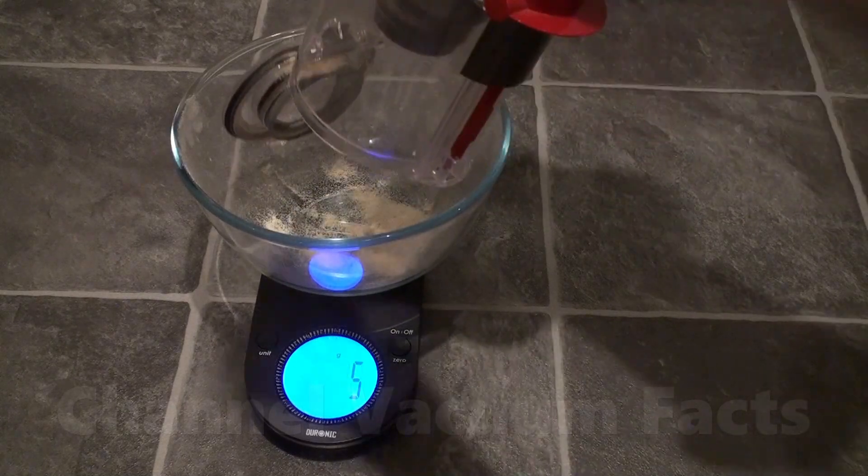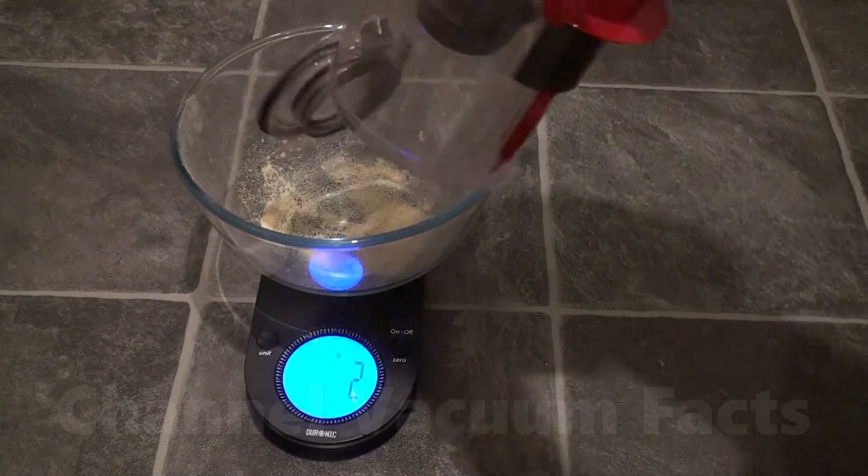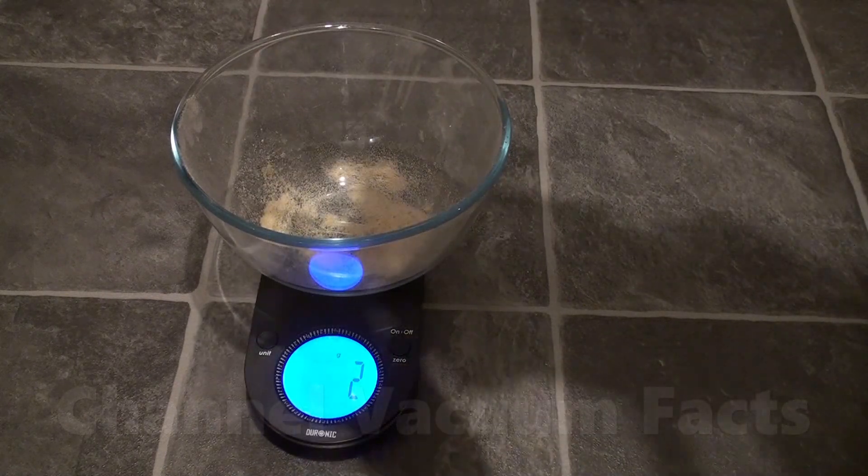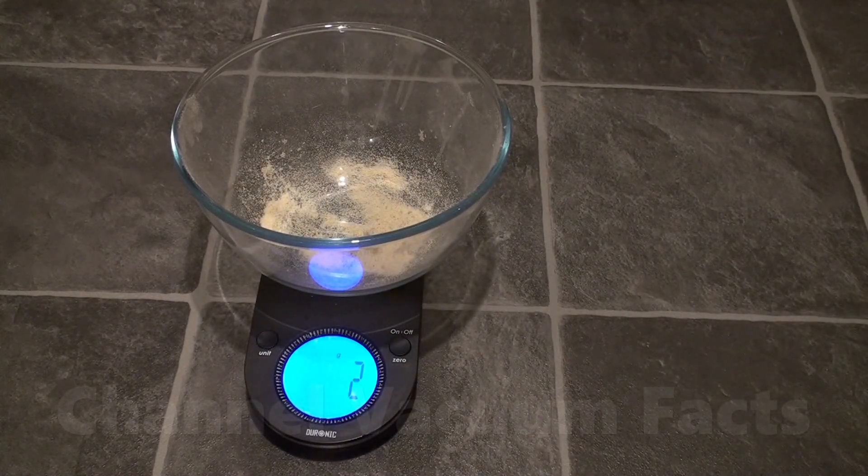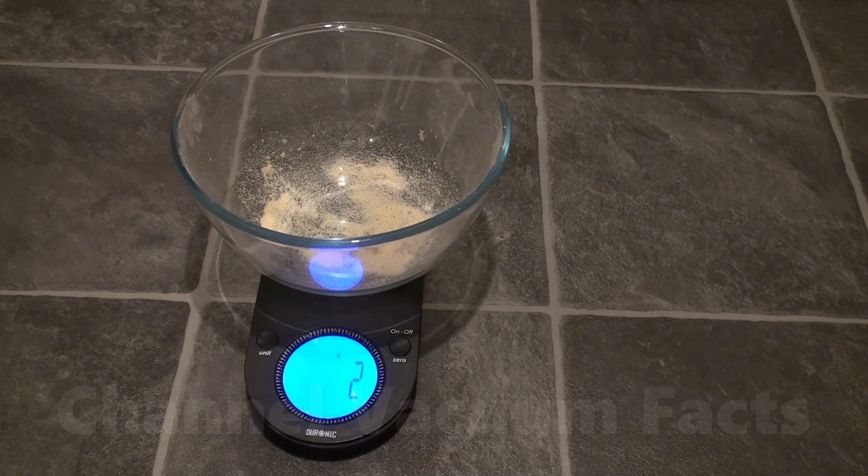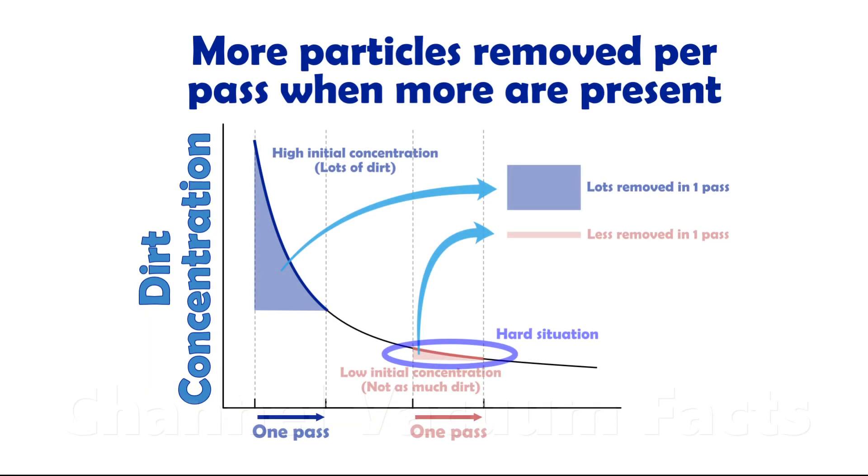To show this very point, I re-vacuumed the carpet again after max mode, but back in mode 1. I managed to extract another 2g of dust, showing once and for all that even a more powerful vacuum, or more powerful vacuum mode in this case, still leaves dust behind, again because removal is stochastic and described statistically. That higher power, suction and airflow didn't remove everything, it just removes proportionally more per pass.